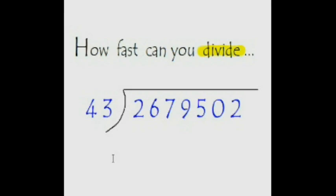Now we'll be learning the EasyCal tricks to divide numbers really fast. My question is very straightforward: how fast can you divide this huge number by 43? Since this number has 7 digits, I'm giving you 12 seconds to do it. Your time starts now — give it a try.